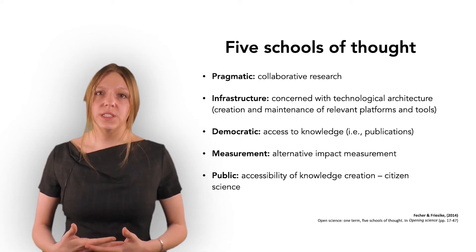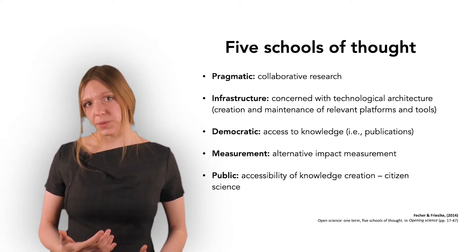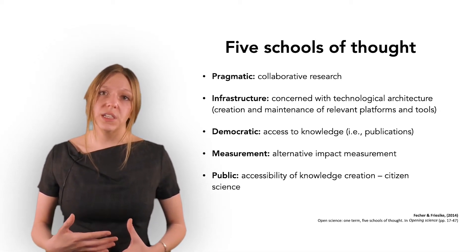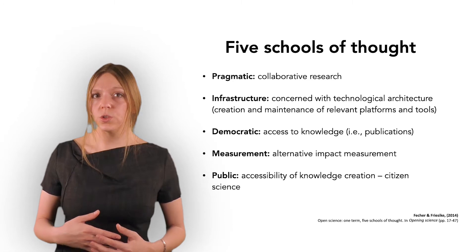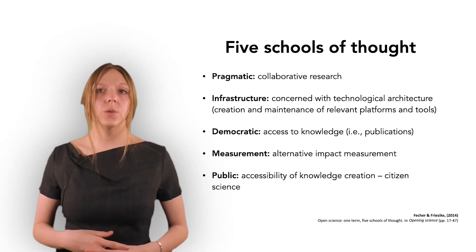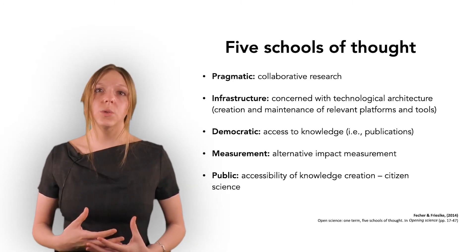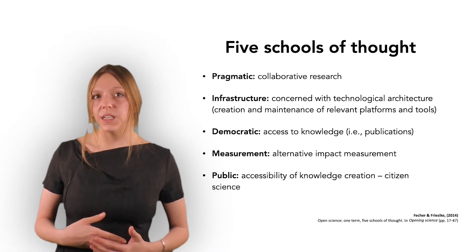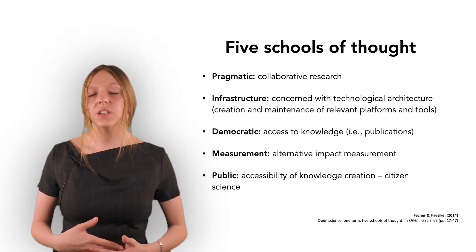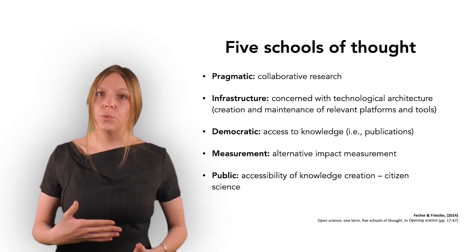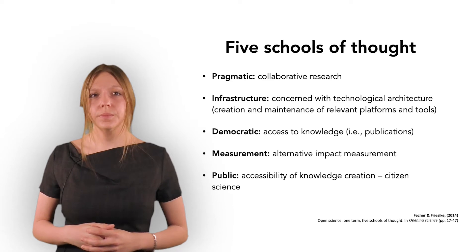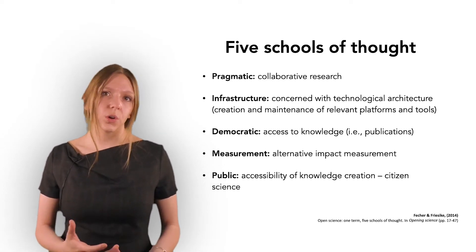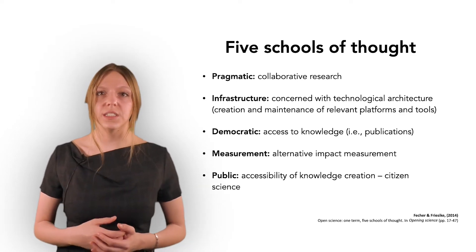The measurement school focuses on alternative impact measurement. In this perspective, efforts have to be focused on ways in which scientific products are evaluated because they matter to what scientists are incentivized to do. Finally, the public school is most concerned with the accessibility of knowledge creation, meaning how much the public is involved with science, including how research agendas are set. These different schools are not mutually exclusive — they are just a way to order the different possible focuses in open science.